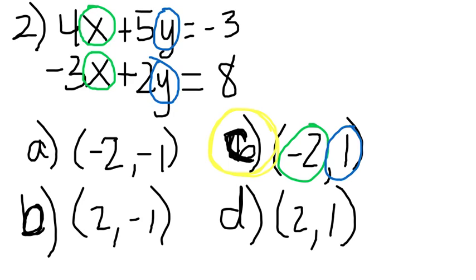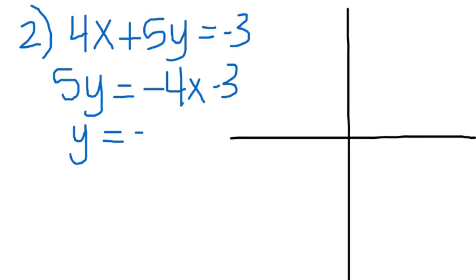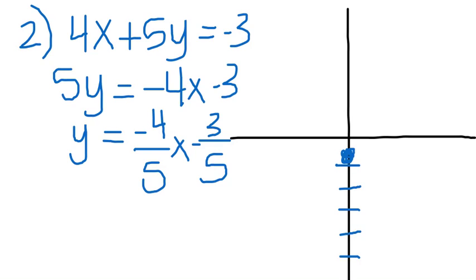But just to show you how to graph these, I will go through the solution to number 2 by graphing. The first equation in number 2, to put it in y equals mx plus b form, you would subtract 4x from both sides, which would give you 5y equals negative 4x minus 3. You would divide both sides by 5, which gives you y equals negative 4 fifths x minus 3 fifths. So graphing this, our y-intercept is negative 3 fifths, which is just before the negative 1. Our slope is down 4 over 5.